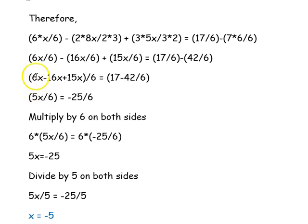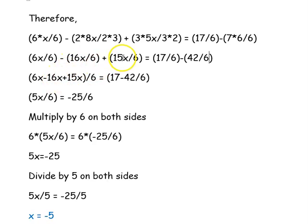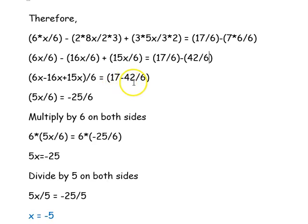All denominators are 6, so we take 6 as common and add all the numerators. The left hand side becomes 6x minus 16x plus 15x, all divided by 6. On the right hand side, the denominator 6 is also common, so we subtract the numerators to get 17 minus 42 divided by 6.